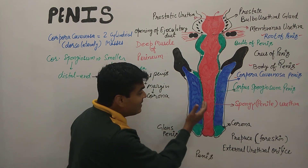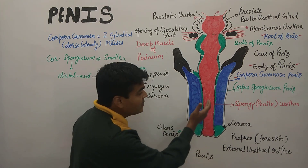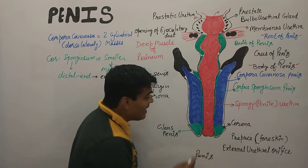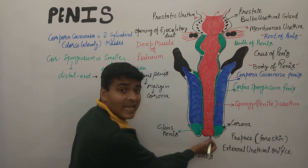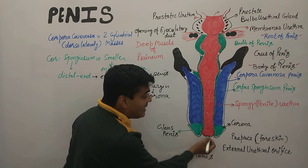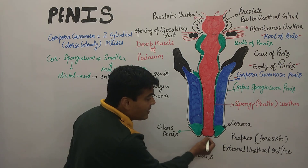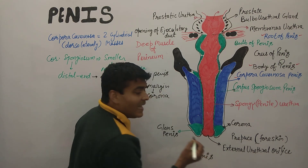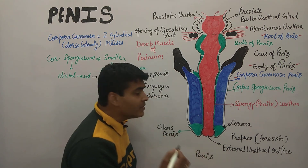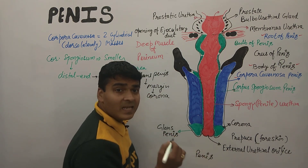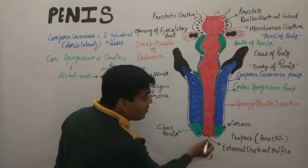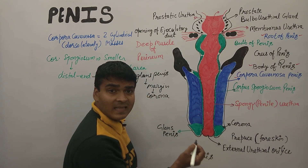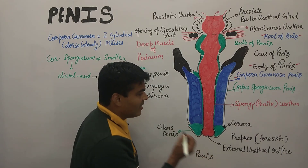At the end of the spongy penile urethra, there is a slit-like opening. This opening is known as the external urethral orifice, through which urine and semen exit.